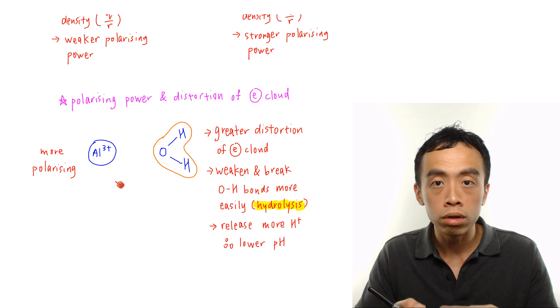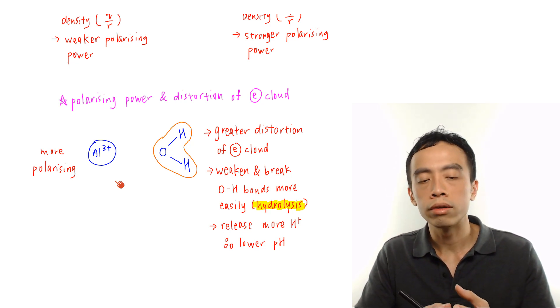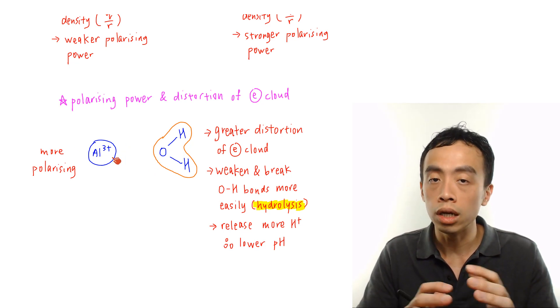Now if it is more polarizing, it has a greater ability to distort the electron cloud of a neighboring anion. So Al3+, if it is in aqueous medium, and it is surrounded by water molecules, what it can do is it can distort the electron cloud for water molecules.